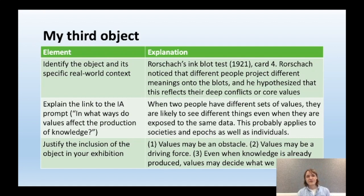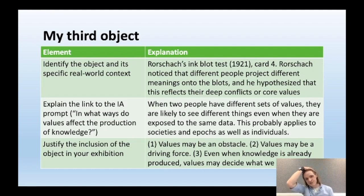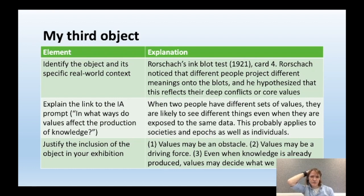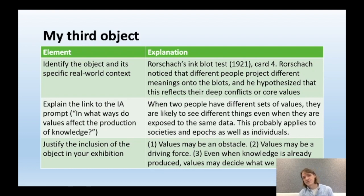For the purposes of the TOK exhibition, what's important is that different people see the same inkblot but report seeing different things — because presumably different people attach subjective importance to different details and aspects of their lives. My third object will be Rorschach's inkblot test created in 1921, card 4. Rorschach noticed that different people project different meanings onto the blots, hypothesizing that this reflects their deep conflicts or core values, and used that to diagnose the conflicts and values of his patients.